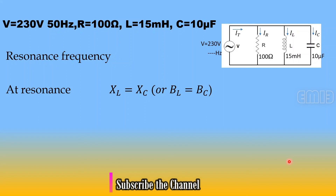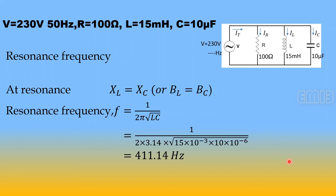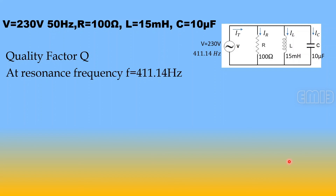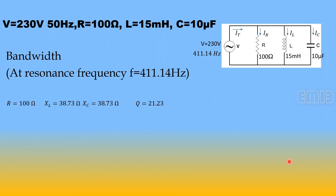Resonant frequency: f0 = 1/(2π√(LC)) = 411.14 Hz. Quality factor: Q = R/XL = R/XC = 21.23. Bandwidth: BW = f0/Q = 411.14/21.23 = 19.36 Hz.